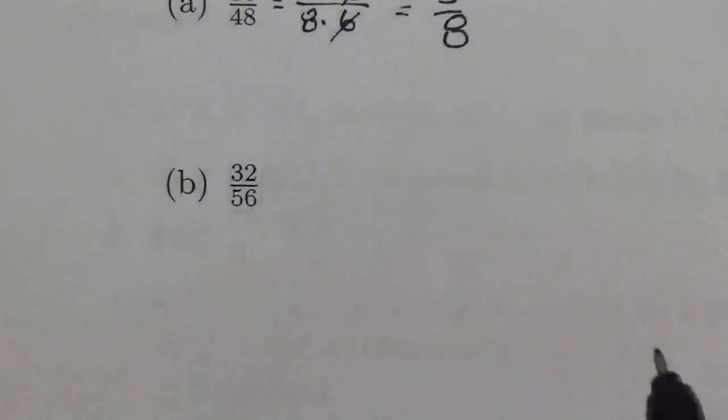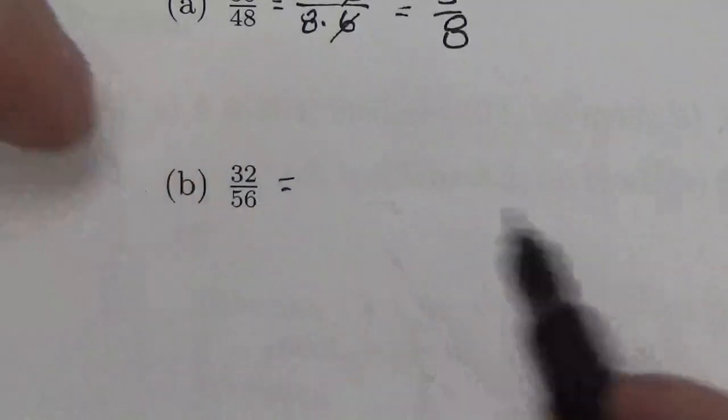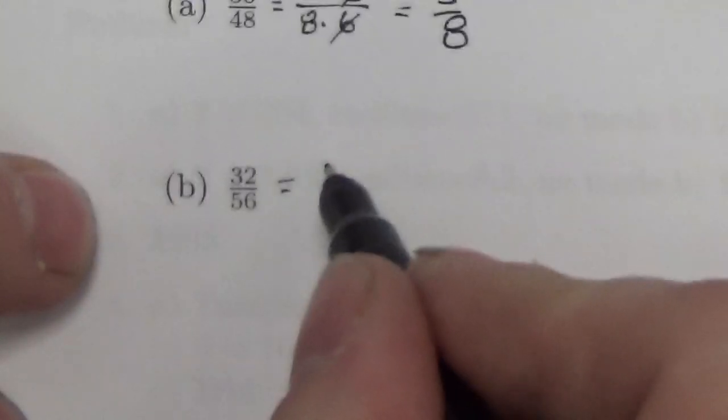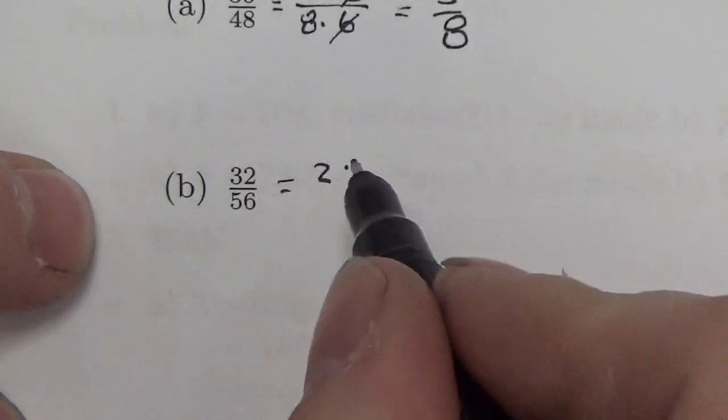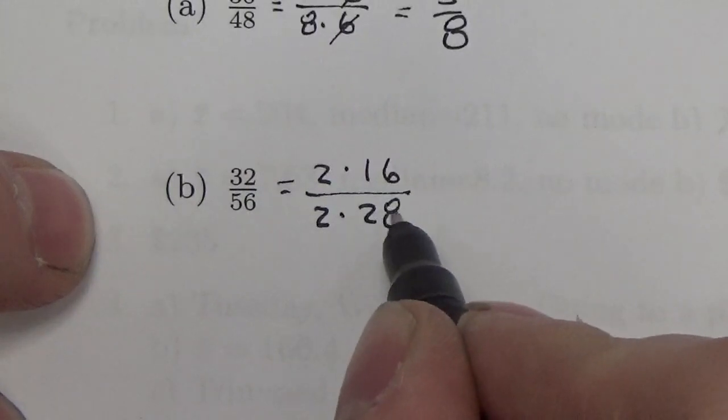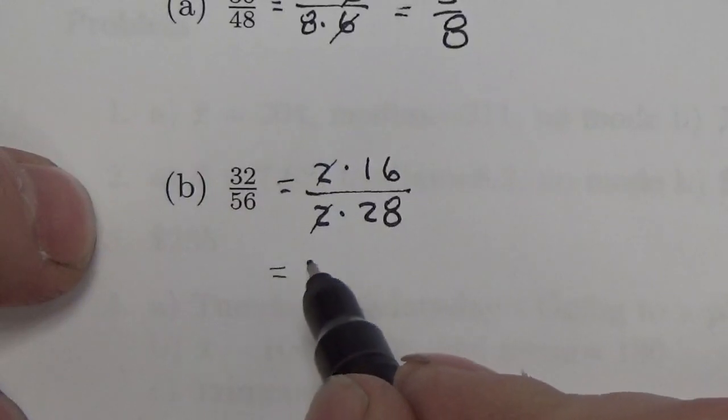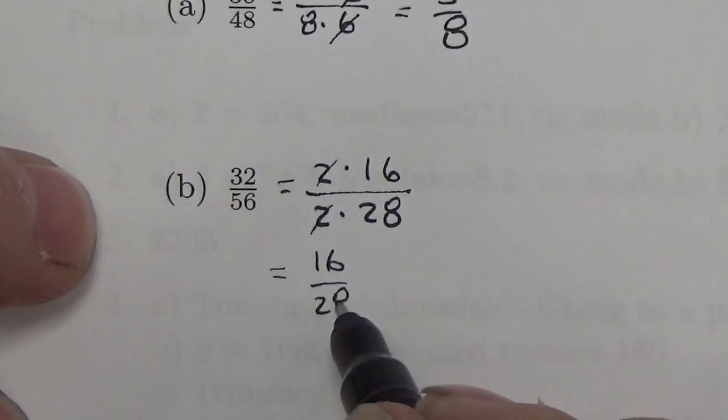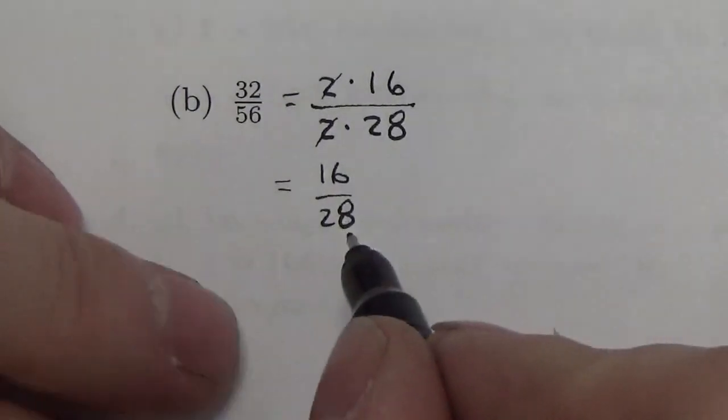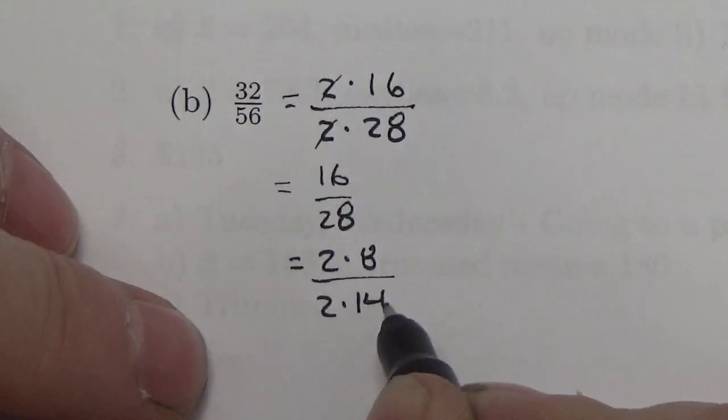So over here, when we take a look at this, 32 and 56. And just to show you how this works here, maybe right off the top of your head, you're not familiar with what the common factor is. But you look at those and you both think, well, those are both even. So I know that 32 is 2 times 16. And I know that 56 is going to be 2 times 28. And so now I can cancel those 2s there. And so I get this down to be 16 divided by 28.